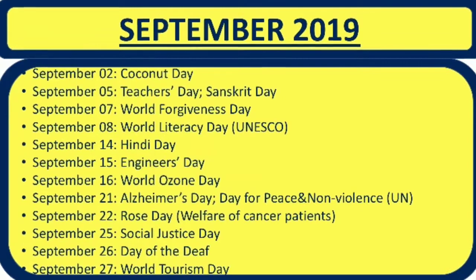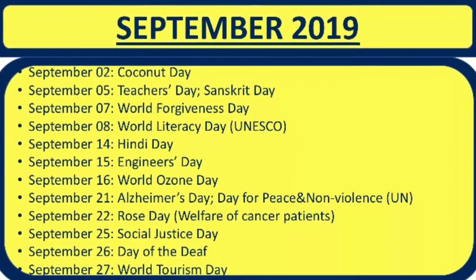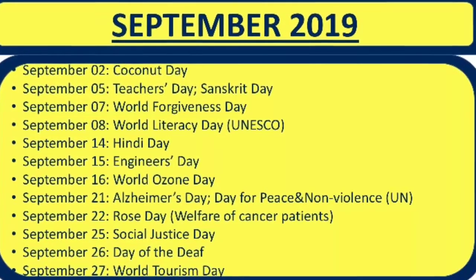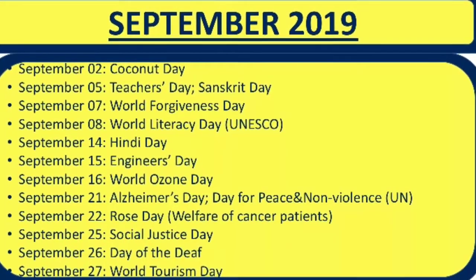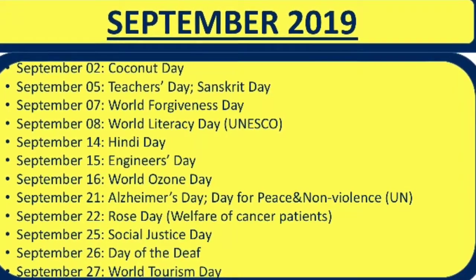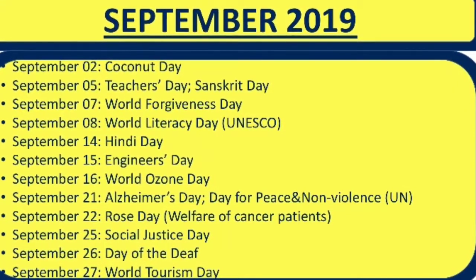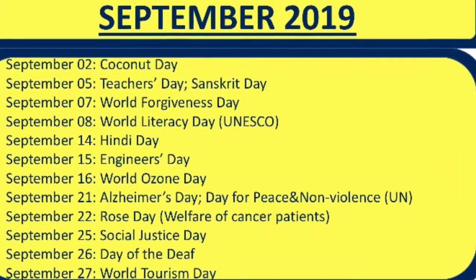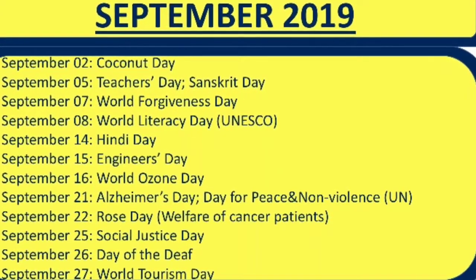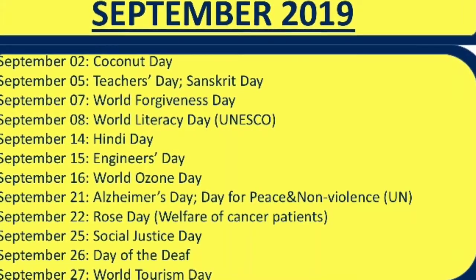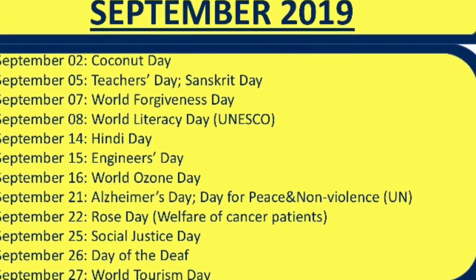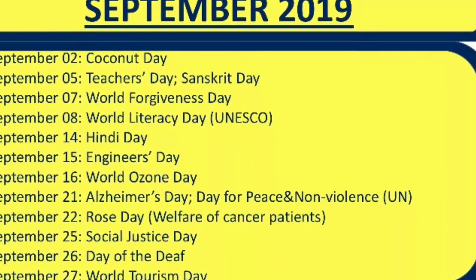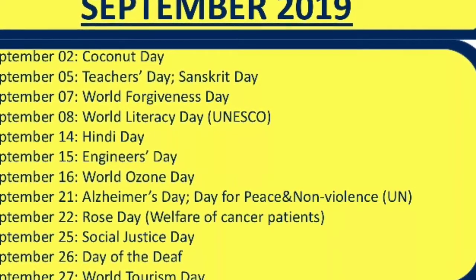Next is September 2019. 2nd September: Coconut Day. 5th September: Teachers' Day and Sanskrit Day. 7th September: World Forgiveness Day. 8th September: World Literacy Day by UNESCO. 14th September: Hindi Day. 15th September: Engineers' Day. 16th September: World Ozone Day.